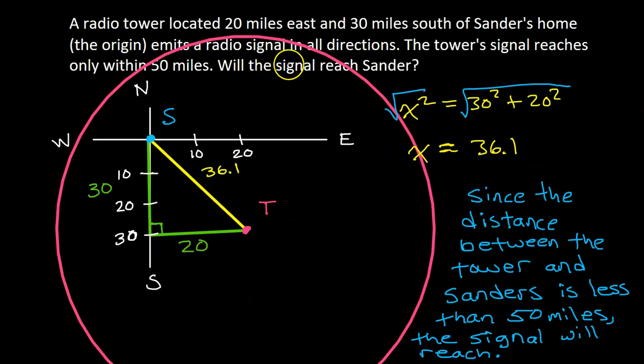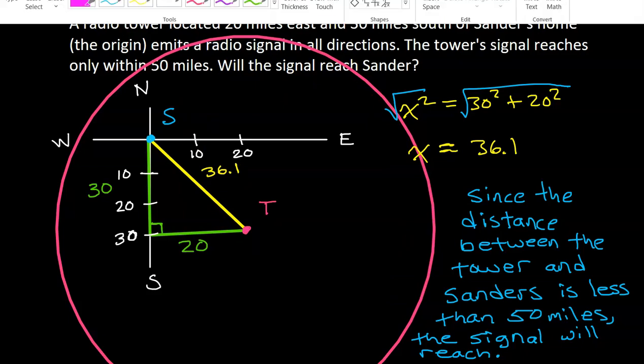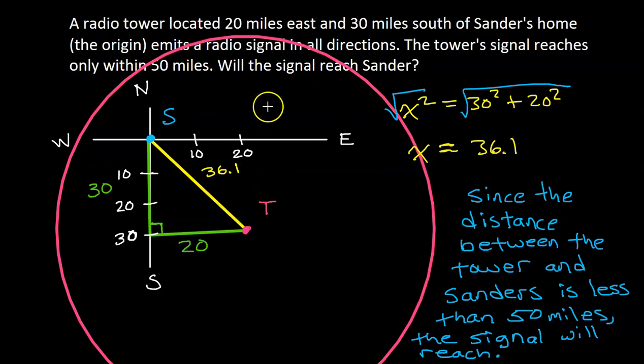We could use this red circle to represent the signal radius. And the signal radius is 50 miles, we were told. So of course, this radius of 50 will extend far beyond the 36.1 mile distance between Sanders and the tower.